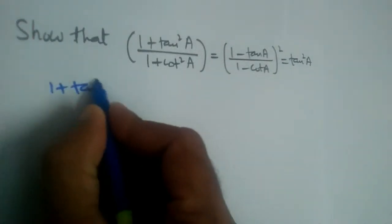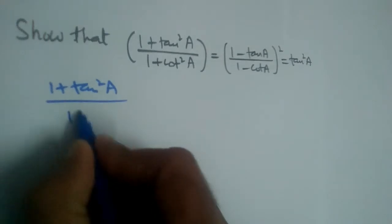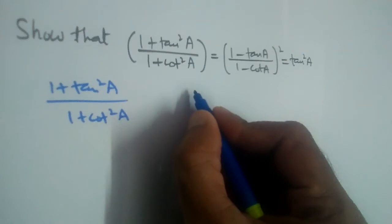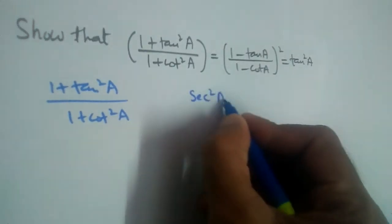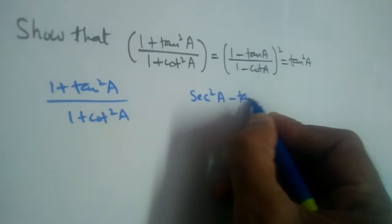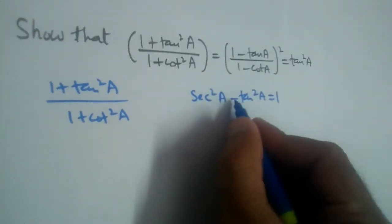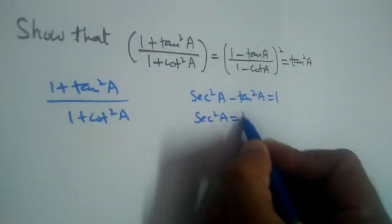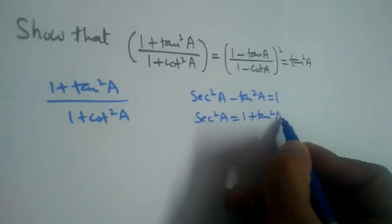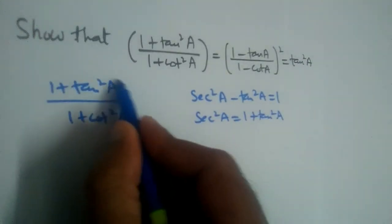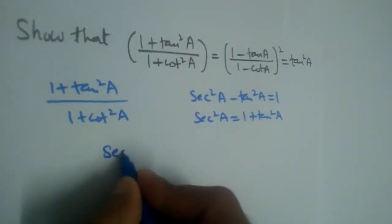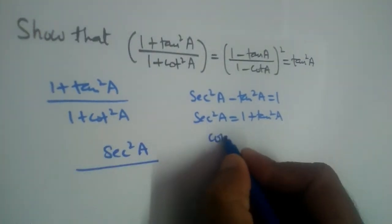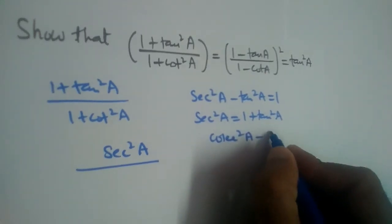For (1 + tan²a) / (1 + cot²a), we have studied the identity that sec²a − tan²a = 1. So if tan goes to the other side, sec²a = 1 + tan²a. In the numerator, we can write sec²a. There is one more identity: cosec²a − cot²a = 1.